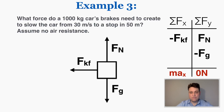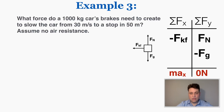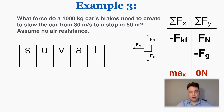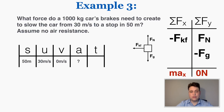My issue is that I can't get the force of kinetic friction without knowing the acceleration, but I'm actually given enough values to solve for the acceleration because I have three kinematic variables. The starting velocity is 30 meters per second, the final velocity is 0 meters per second because it comes to a stop, and the displacement is 50 meters. I can use those three kinematic variables to solve for the fourth.